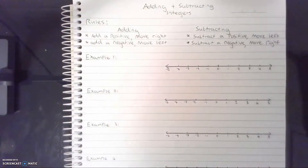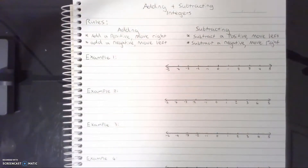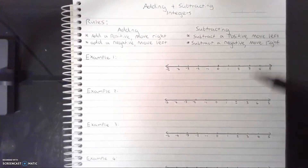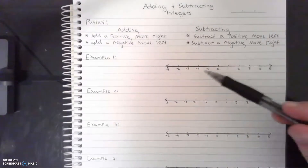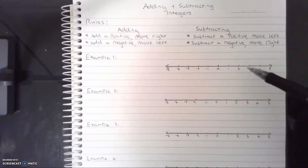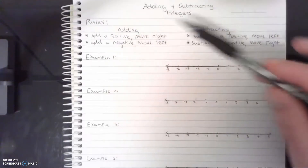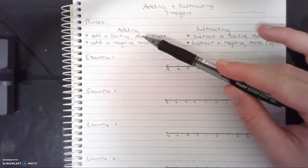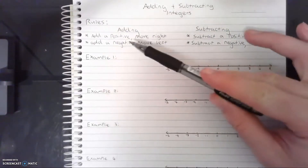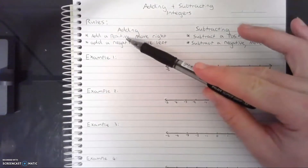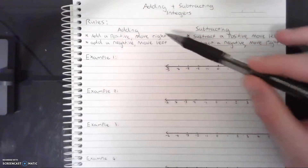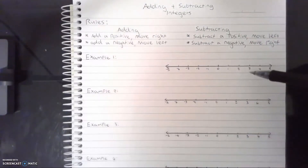In this video I'm going to show you how to both add and subtract positive and negative integers. To do this successfully, we are going to be using our number lines. To use our number lines, we have to apply a few rules.